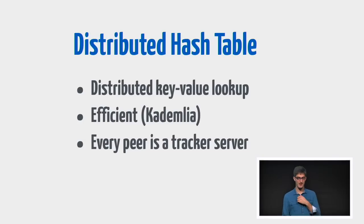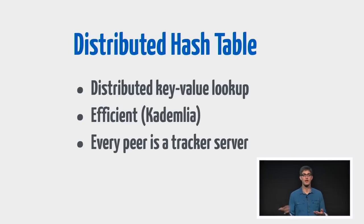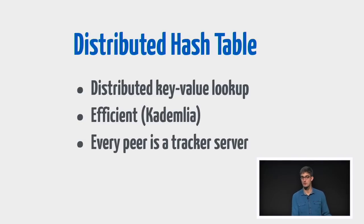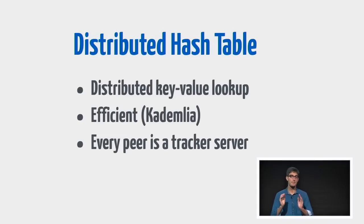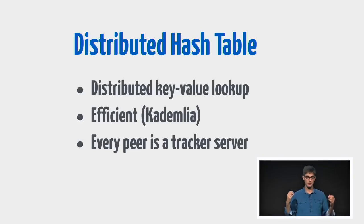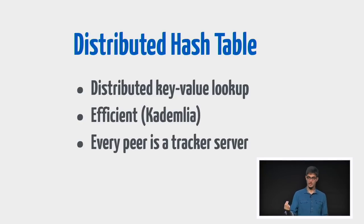A DHT is basically just a distributed key-value lookup. In JavaScript you have objects and you can use them as a key-value lookup — well, a DHT is just that, except the storage is across millions of nodes all over the world. When you want to do a lookup, you go out and find those nodes, tell them the key you want to look up, and they give you back the value. You can basically turn all the peers in the BitTorrent network into mini-tracker servers — everyone is tracking a certain subset of torrents, keeping that mapping of torrent hash to array of peers. It uses a system called Kademlia with provable performance characteristics that are O(log n) where n is the number of nodes in the network.